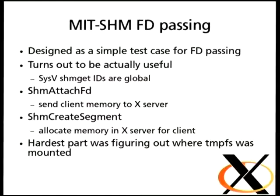There are just two requests I added to the MIT shared memory extension: attach FD, which says I have a pile of shared memory attached to this file descriptor and I'm passing it to you; and a way for the application to say, please Mr. X server, allocate a pile of shared memory for me and give me that file descriptor back. The hardest part of implementing this was actually figuring out where tmpfs was mounted. I have a long list of potential directories now where tmpfs might be mounted by your distribution, and I hope I find it.